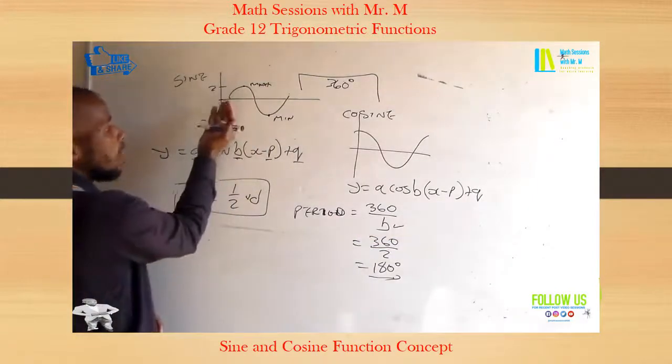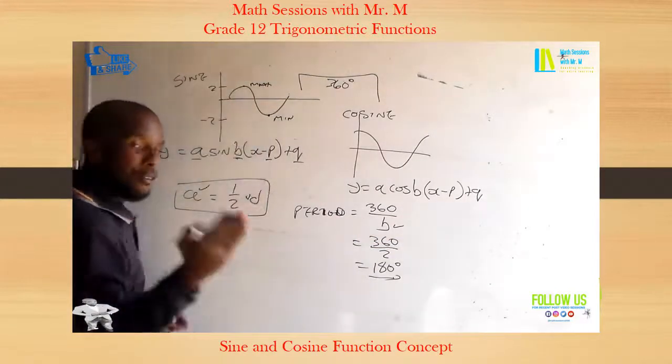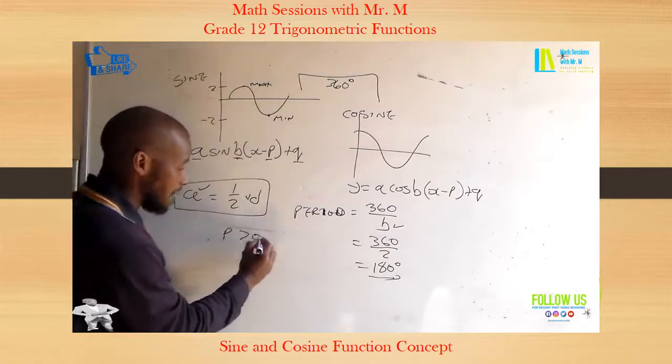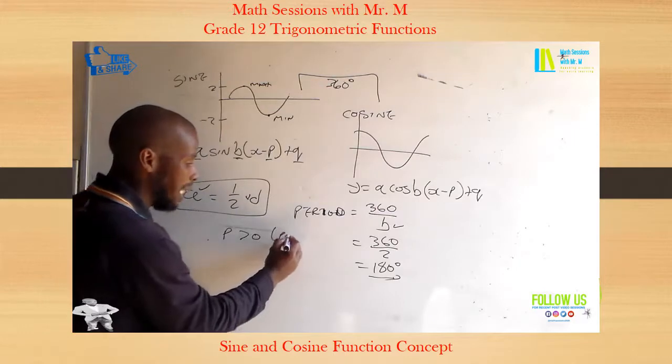Now look at this graph. The graph is explained in this way: your P, if your P is greater than 0, which is when your P is positive, your graph is shifting to the left.